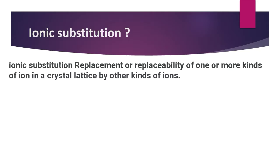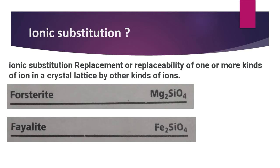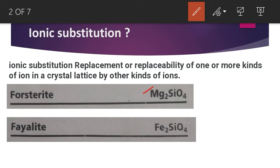Ionic substitution is the replacement or replaceability of one or more kinds of ions in a crystal lattice by another kind of ion. We have different kinds of ions in any crystal and these ions can be replaced by each other. For example, we have two end members of the olivine family — forsterite and fayalite — and the chemical formula is the same except that forsterite has magnesium and fayalite has iron.